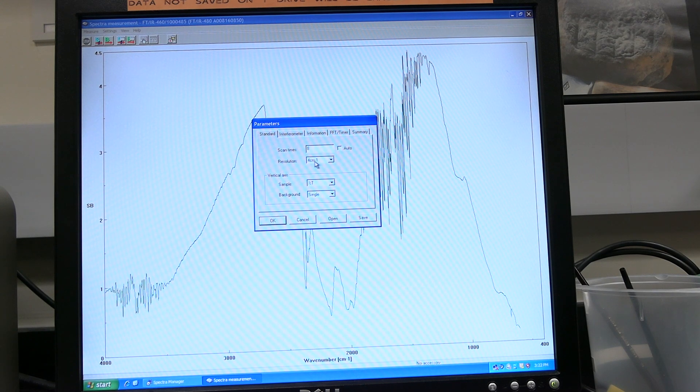For samples, set how to collect the sample data. Leave background set to single. Click on the interferometer tab. Set gain, scan speed, and filter to auto. Click on the information tab.